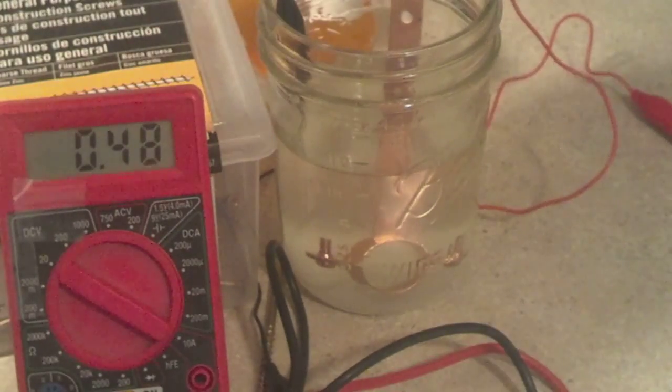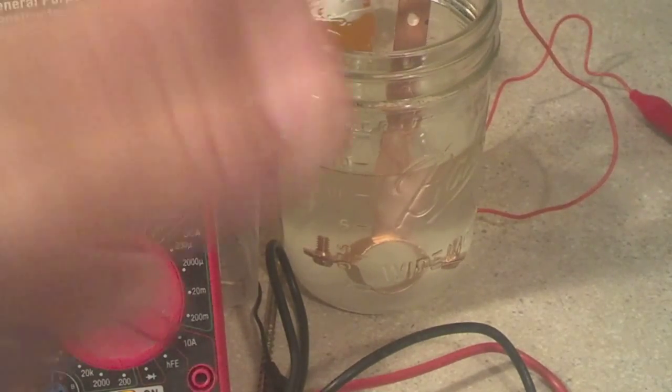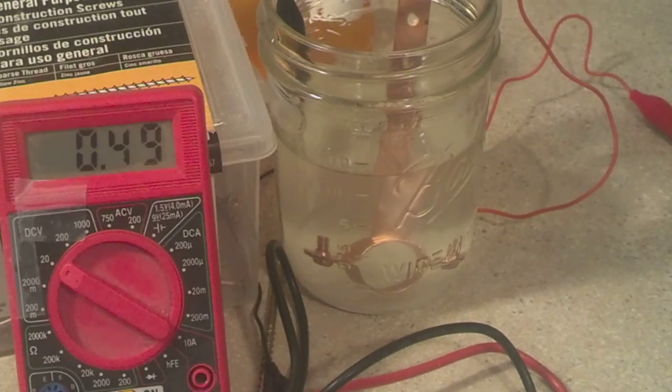And those ions are flowing through the acid. In this case we're using vinegar with a little bit of salt. I found the salt didn't make any difference as far as the voltage. I just thought it might kick it up but it didn't.